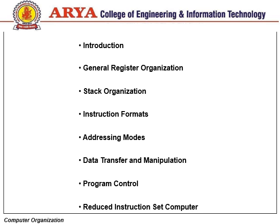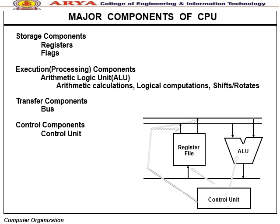Topics also include program control and Reduced Instruction Set Computer (RISC). The major components of the CPU are storage components — registers and flags — execution components such as the Arithmetic Logic Unit (ALU) for arithmetic and logic computation, shift and rotate operations, transfer components (buses), and control components (control unit). A diagram shows the register file, ALU, and control unit.